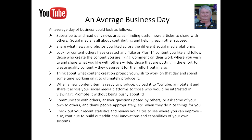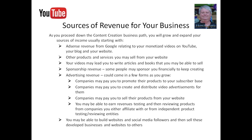What are the sources of revenue for this type of business? As you proceed down the content creation path, the first revenue item you're going to see is AdSense revenue from Google related to your monetized videos on YouTube, your blog, and your website. Other products and services you might sell from your website can contribute to the revenue stream. In the early days, your videos may lead you to write articles and books — the standard initial e-book offer on Kindle is usually about $2.99, and that grows into real revenue from Amazon over time.